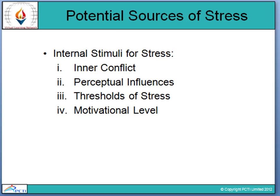The second internal stimulus is perceptual influence. Your perception is influenced by a number of internal factors. People with inner conflict are more likely to experience stress than self-confident people, because the environment is presumed to be full of danger — evidence of danger is selectively perceived in exaggerated form. This is perceptual influence, where certain perceptions you hold in your mind create stress.